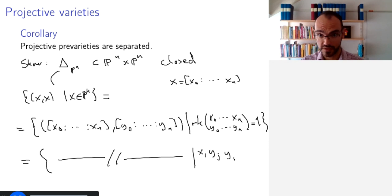And this is exactly the set of all such points where these two by two determinants x_i y_j minus y_i x_j is equal to 0 for all i, j.